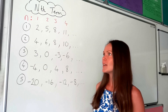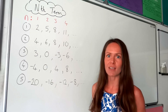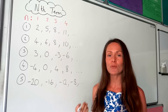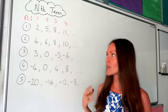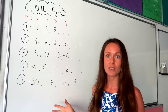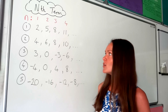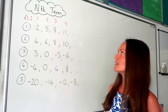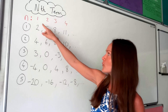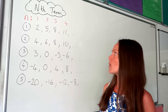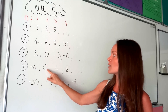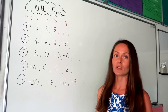The nth term sounds a bit strange because nth is not really a word. It's just a formula that we use to help us calculate any number in a sequence of numbers. So n is just the position of the number — for the first number, n is 1, and for the second number in the sequence, n is 2, and so on.